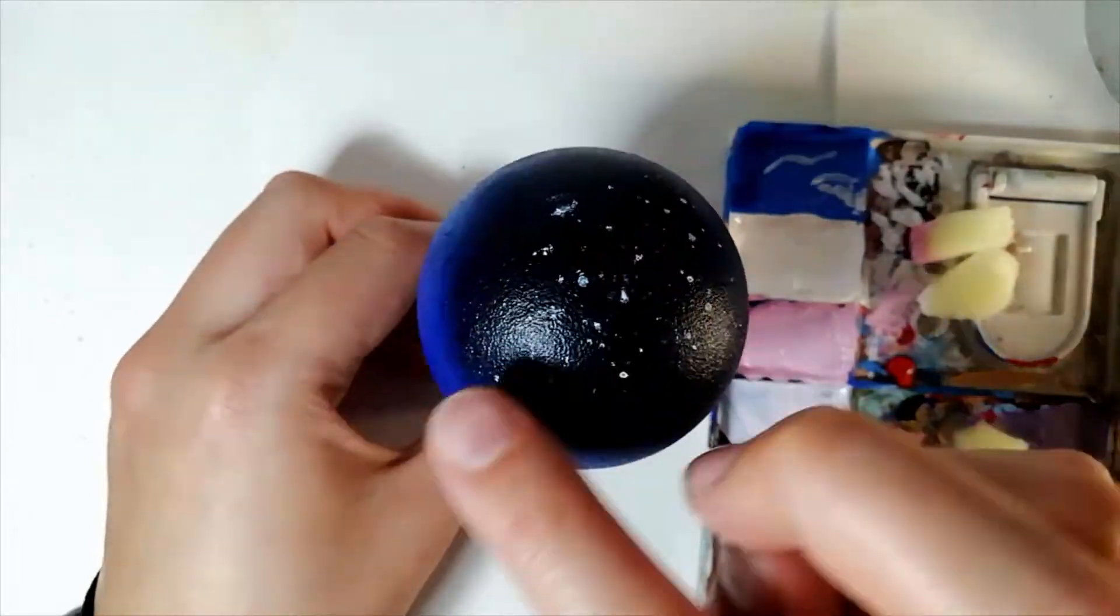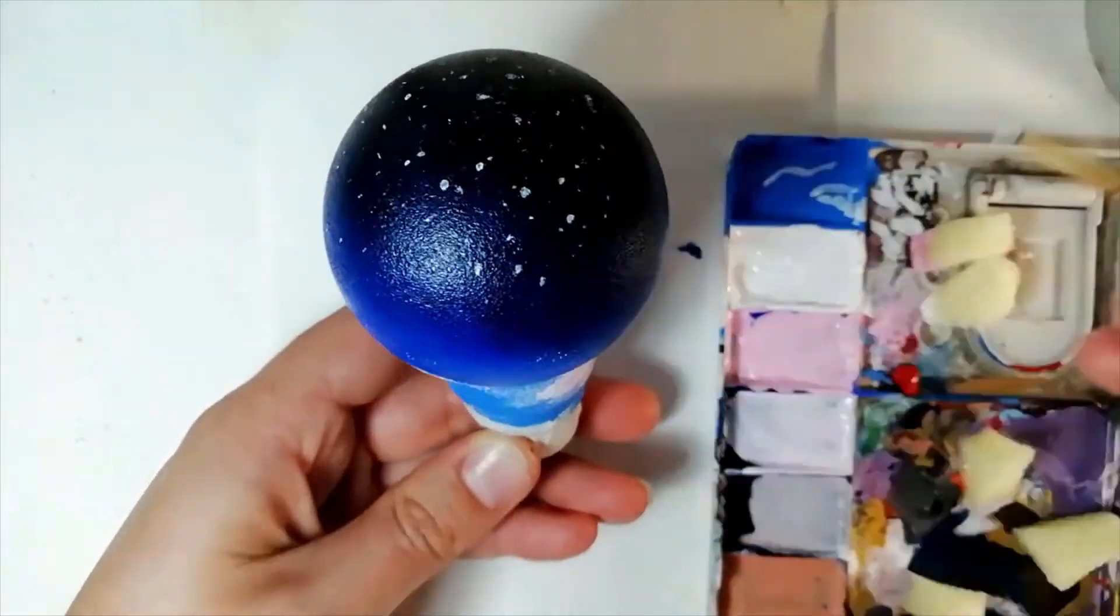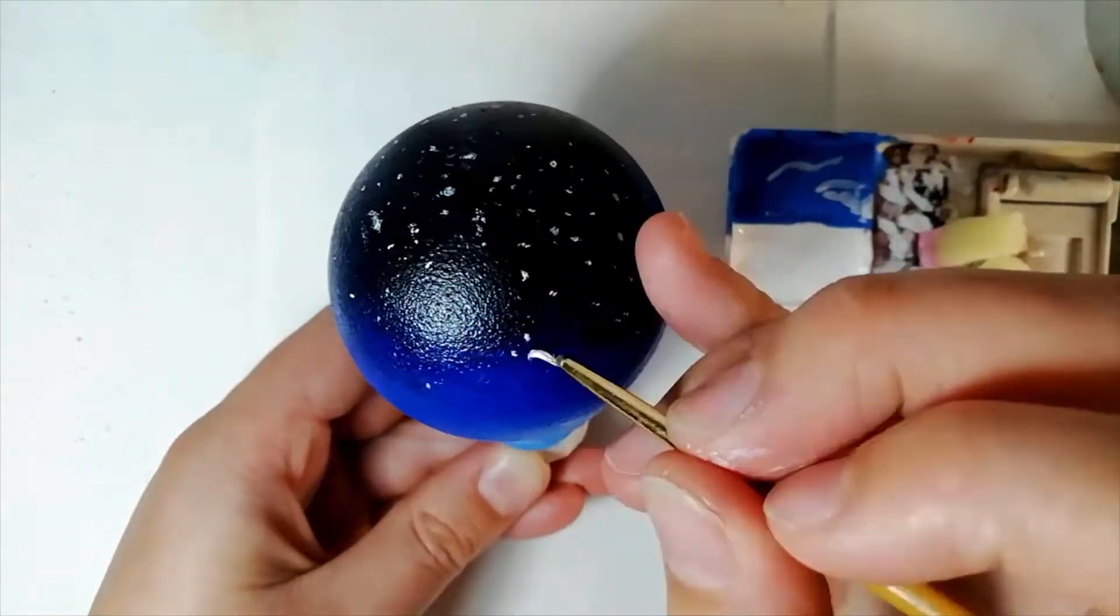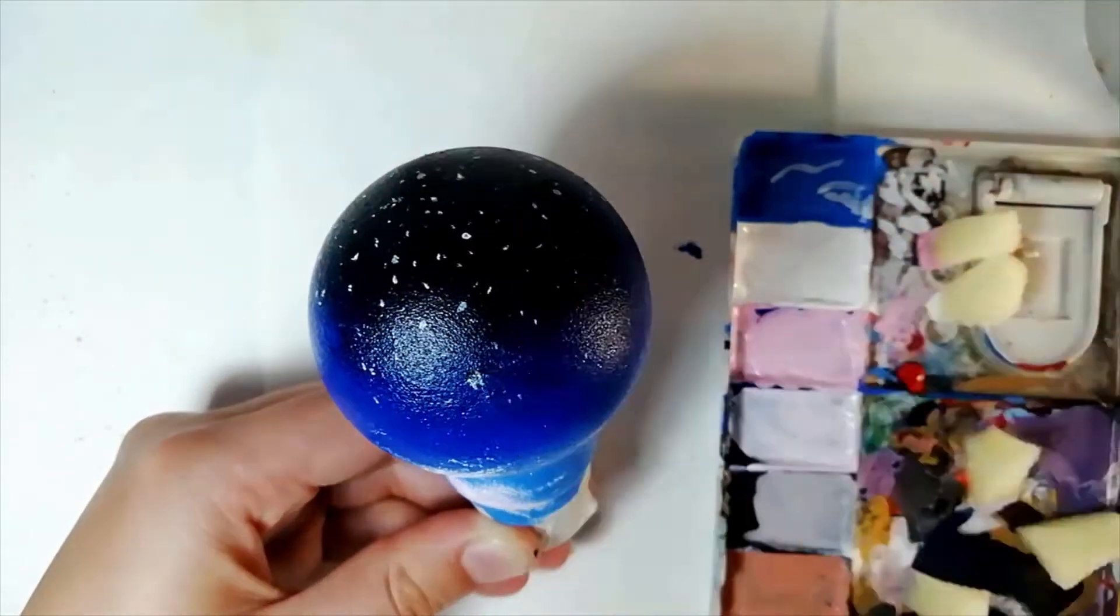Of course, you could thin down the white paint and spray it at the bulb by flicking it off your paintbrush, but I didn't want to risk getting paint everywhere in my uni accommodation.